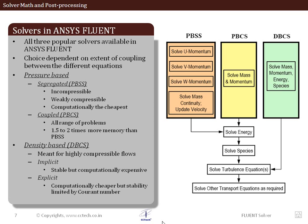ANSYS Fluent offers three methods to solve these equations. Two fall under pressure-based solvers and one is the density-based solver. The pressure-based segregated solver solves the x, y, z momentum equations separately, then uses a pressure correction via the continuity equation to update velocity, solving other transport equations in a segregated fashion. If equations are strongly coupled, the segregated solver may struggle to achieve convergence.